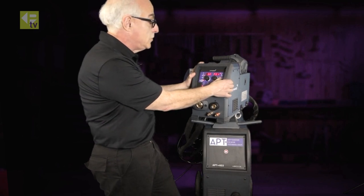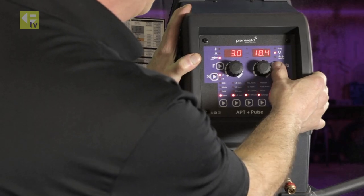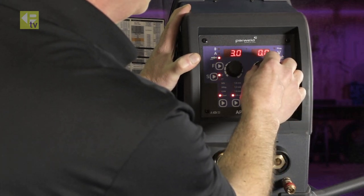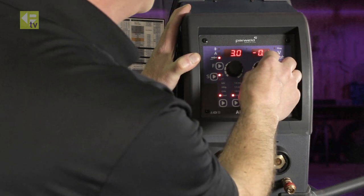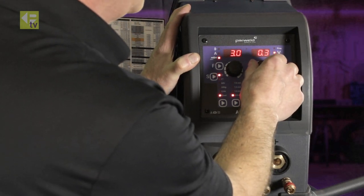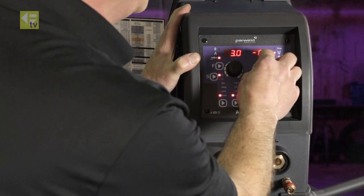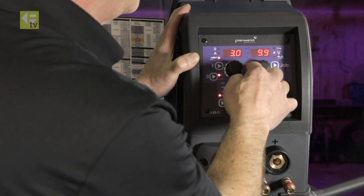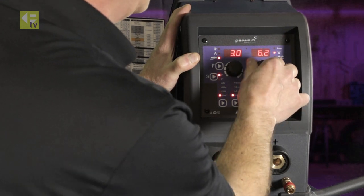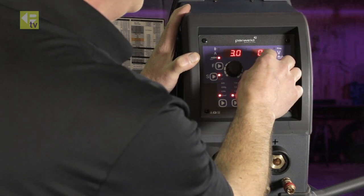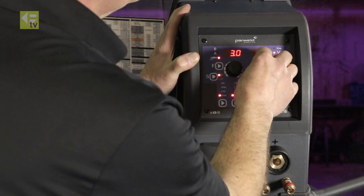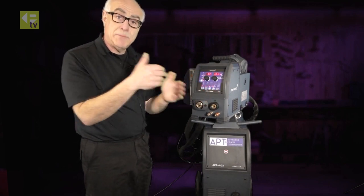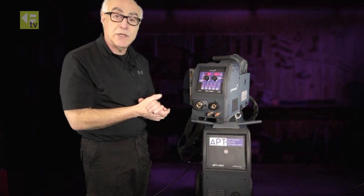Now what I mean by trim, if we go into that function there, we can change your stick out of your wire when you're actually working on synergic control. So we can go to a minus figure right up to 10 and also a plus figure right up to 10, but ideally we always try and set the machine working from zero. So this actually gives you more wire or less wire depending on how you set up your equipment and how you like to run.